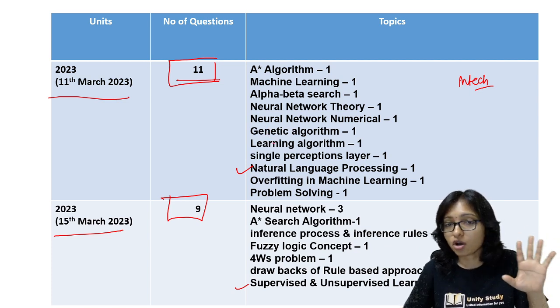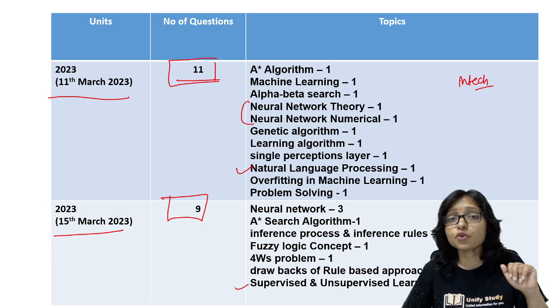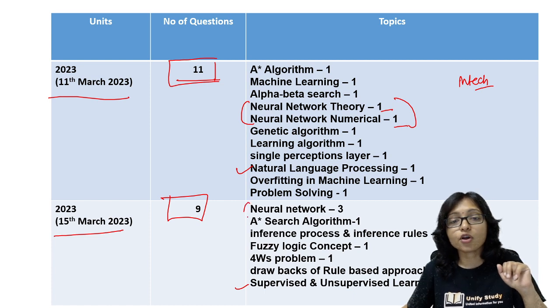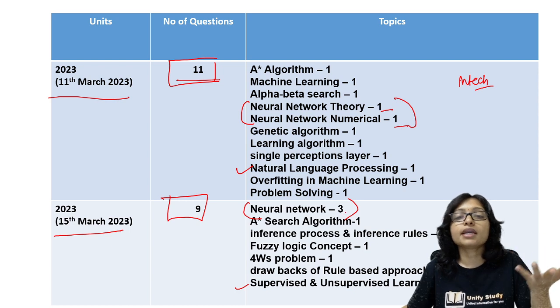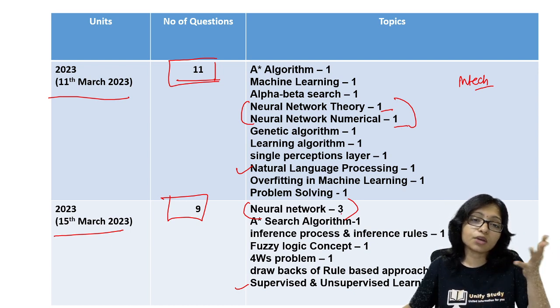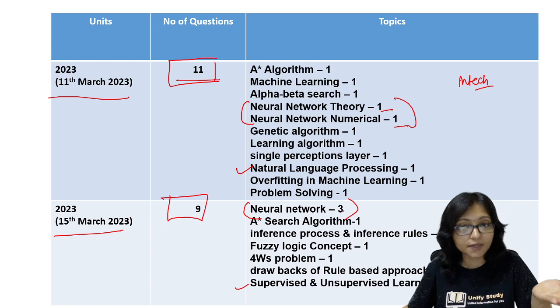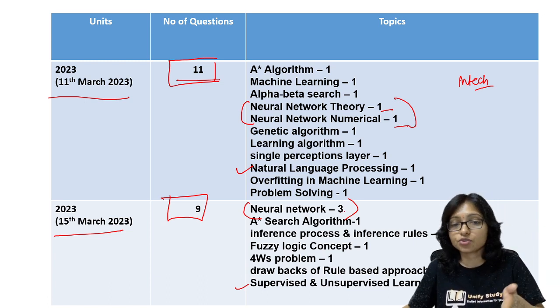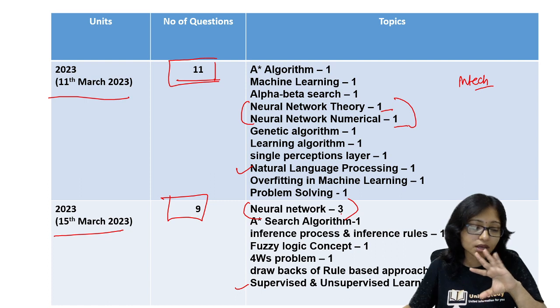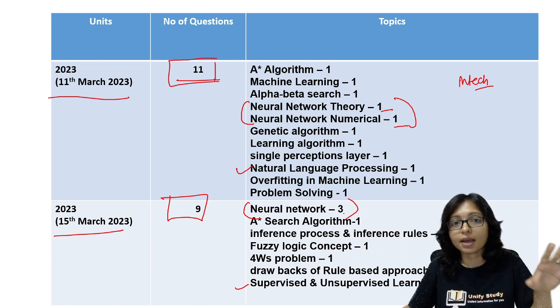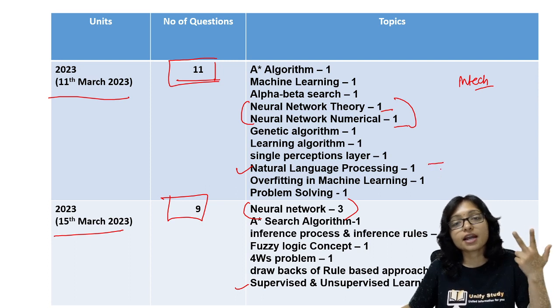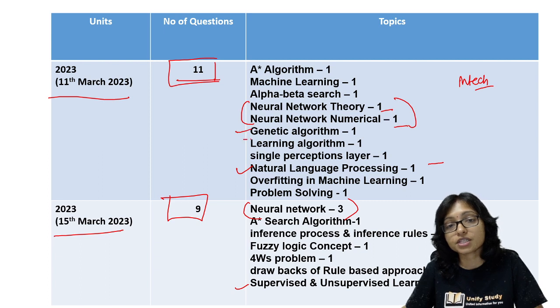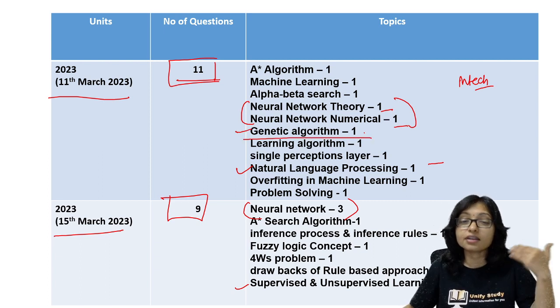This is a big focus area. Next focus is neural network. Neural network theory and numericals, two questions came here. Here also neural network, three questions came. So different types of learning and under the different types of learning, what are the different types of methods and algorithms we are using - that detail analysis and detail mind mapping is very important. Natural language processing is also the next important area, along with neural network and genetic algorithm. From genetic algorithm also they are asking questions about current trends.